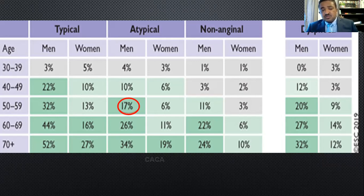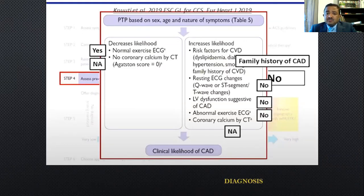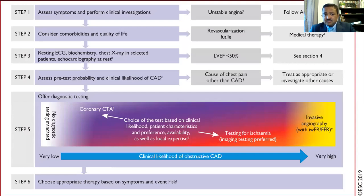As Dr. Halzain pointed out earlier, when assessing pre-test probability it is also important to consider cardiovascular risk factors, any abnormal ECG or echocardiogram, diabetes, hypertension, hyperlipidemia, or a high calcium score on CT scan. If present, these would categorize the patient at high clinical likelihood of coronary artery disease.